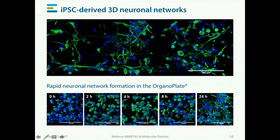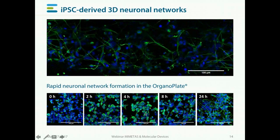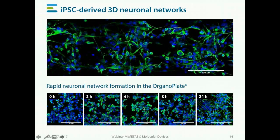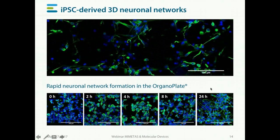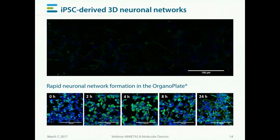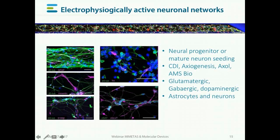Network formation takes place in about 24 hours. When the cells are seeded they're rounded off, but already in a couple of hours they start to generate projections, and there's a fully functional neuronal network after 24 hours when you seed mature, differentiated iPSC-derived neurons. We can do a range of marker stains on cells fixed inside the plate — antibodies are added inside the plate and washed out, and subsequently the models are photographed during fluorescence microscopy.